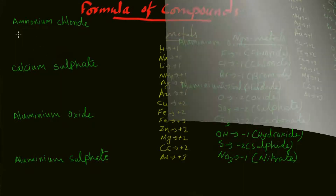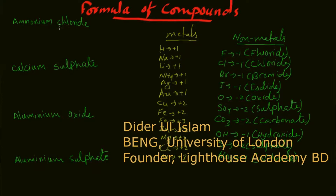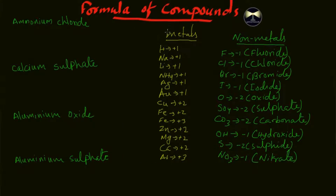Welcome back to my new video on O-level chemistry. In this video we will be discussing how to write the formula of a compound. In my previous video I discussed oxidation states in detail, so I have written that again here. You have to know the oxidation states of metals and non-metals so that you can form a compound. Today we'll be writing the formula of these four compounds. Let's start — you just have to understand the basic rule, it's very easy.